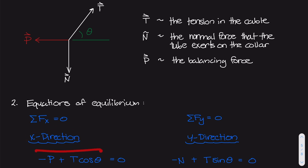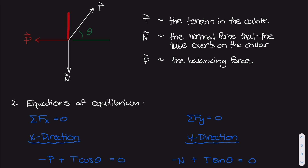These two forces added together should equal zero. In the y direction, we have the normal force acting straight downward as a negative N value, and the tension has a vertical component equal to T sine of theta. Adding those two forces together should give zero.